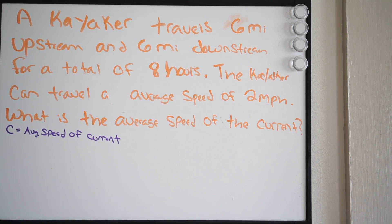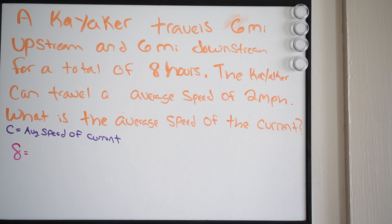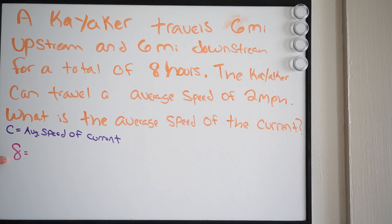Let's figure out how we're going to set this up. Our total time is 8 hours, so I'm going to write 8 equals. Now think about what else we have — we have the distance. The kayaker traveled 6 miles upstream and 6 miles downstream, and we have the average speed of the kayaker which is 2 miles per hour. We want everything on the right side to match our units — hours — so we need to manipulate this accordingly.